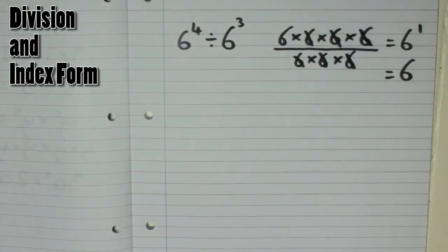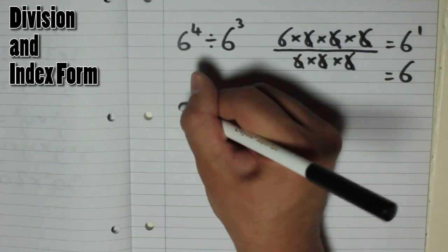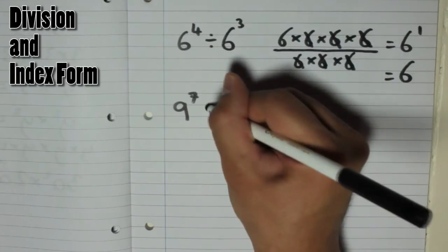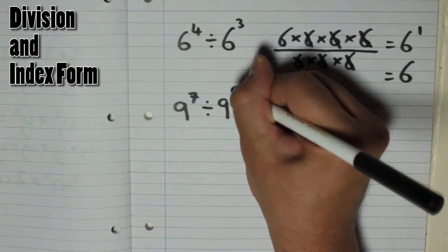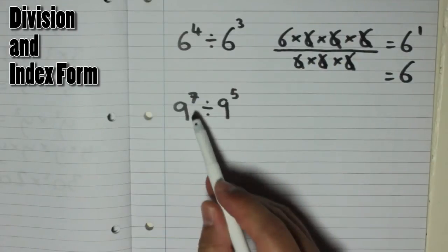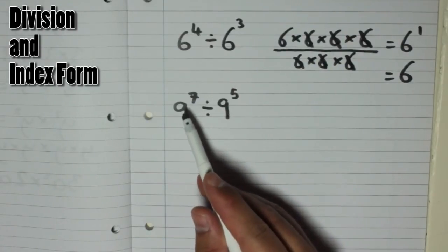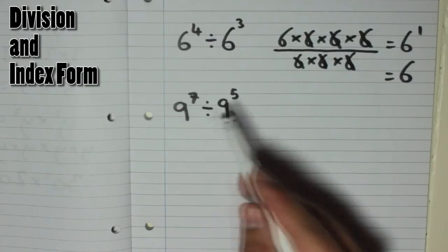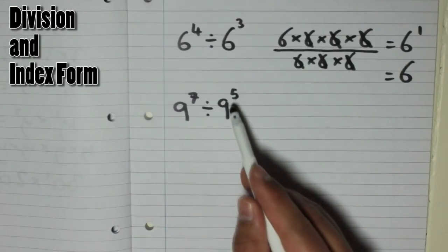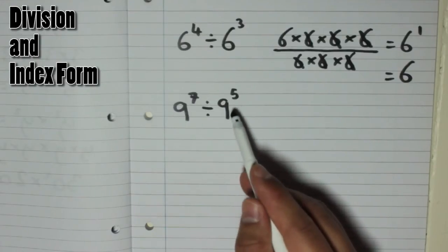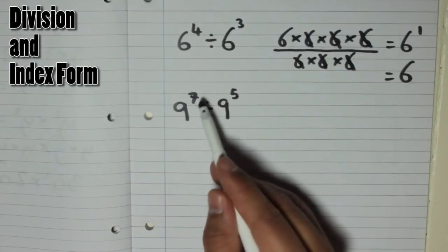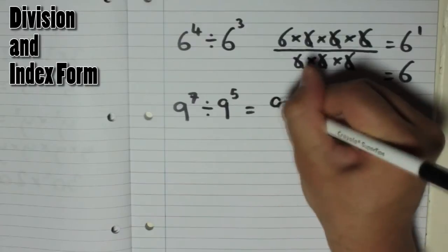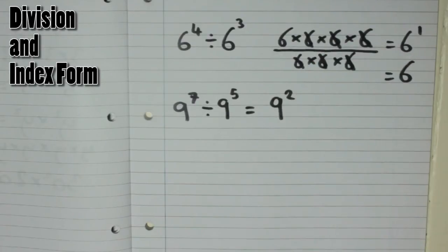Let's try another one. Let's have a look at 9 to the power of 7 and divide that by 9 to the power of 5. So that means 9 times 9 times 9 times 9 times 9 times 9 times 9, divided by 9, divide by 9, divide by 9, divide by 9, divide by 9. So what we do, we subtract the indices. 7 take away 5 gives us 2, so it gives us 9 to the power of 2, or 9 squared.